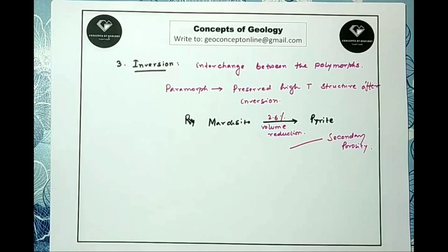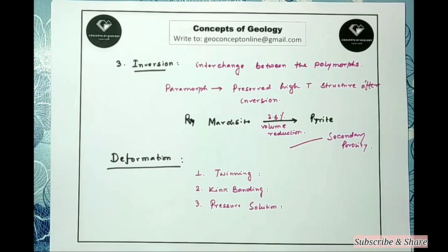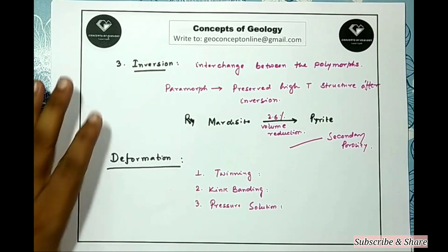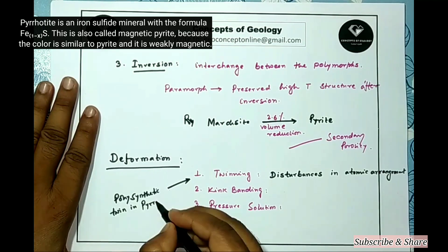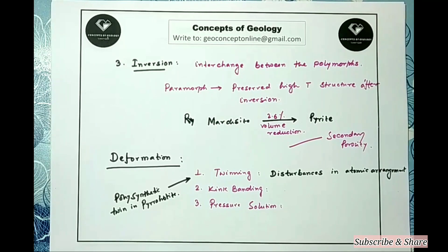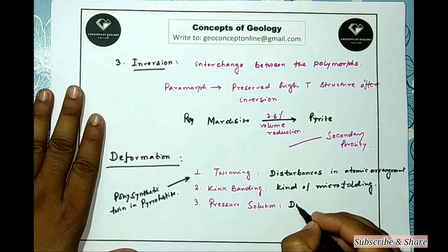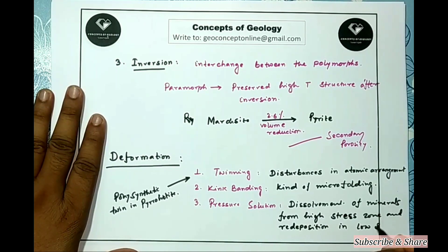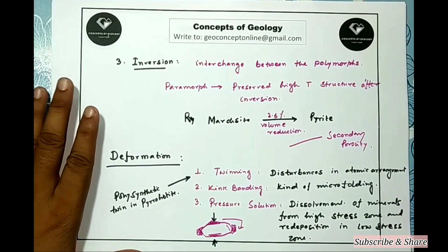The third modifying factor is deformation. Deformation may produce twinning, kink banding, or pressure solution in mineral grains. Deformation twinning occurs due to disturbance in atomic arrangement — for example, polysynthetic twinning in pyrrhotite. Kink banding is a kind of micro-folding. Pressure solution is the dissolving of minerals in areas of high stress and deposition in areas of low stress, often forming overgrowths.